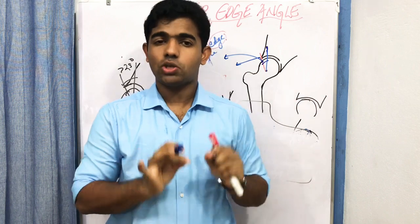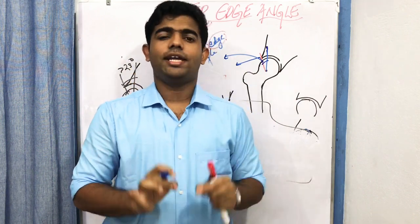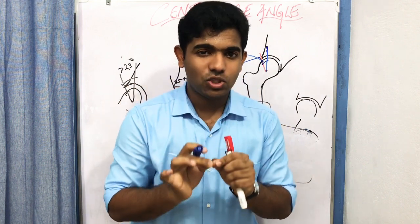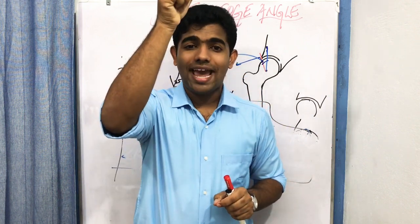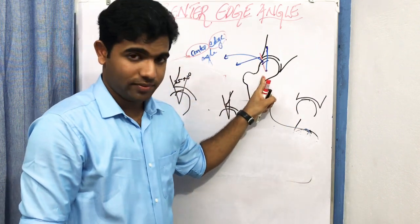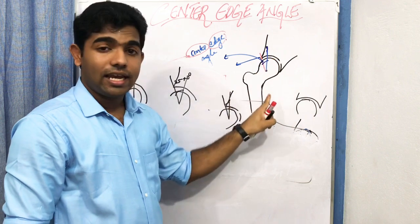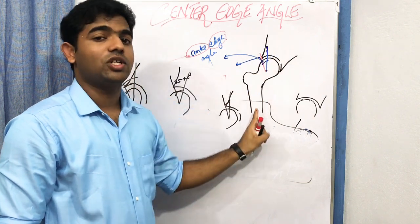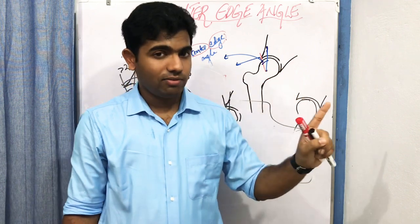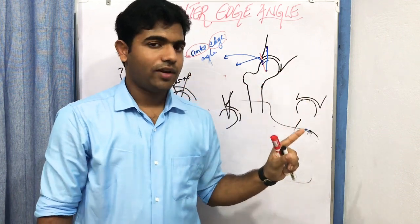The center edge angle is a measurement used to find out femoral head coverage by the acetabulum and acetabular depth. It is formed by the line joining the lateral margin of the acetabulum to the center of the femoral head, and the vertical line through the center of the femoral head. Normal: 25–40 degrees; greater than 40 indicates femoro-acetabular impingement; less than 25 indicates dysplasia.